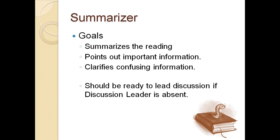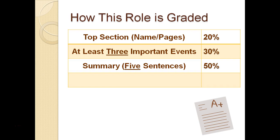How are you graded for this? First of all, the top section is always going to be worth 20%. You need to make sure you put your name and the pages or the chapter that you summarized. You need to have at least three important events in that top bulleted section, and they have to be key events for you to get full credit.